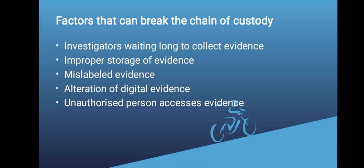There are factors that can break the chain of custody and these should be avoided so as to maintain the integrity that is required. These factors include investigators waiting too long to collect the evidence, improper storage of the evidence — when there is improper storage there will even be cross-contamination of different evidences. We have mislabeled evidence, which can cause evidences to be mixed up if they are not labeled properly. If there is alteration of digital evidence, and also when there is an unauthorized person who accesses that evidence — anyone who is not authorized — that is going to break the chain of custody.